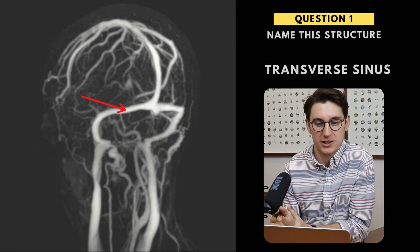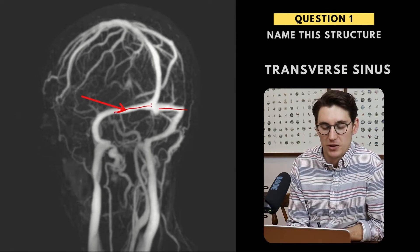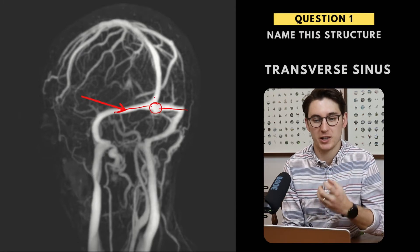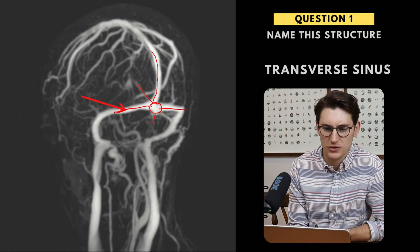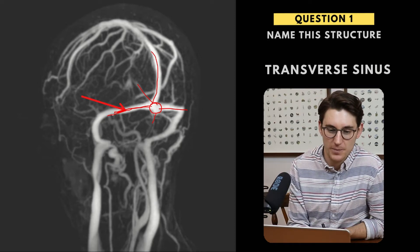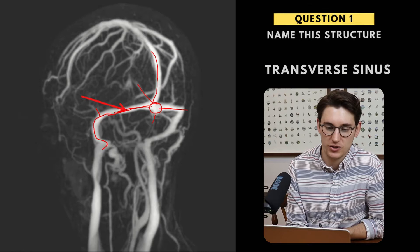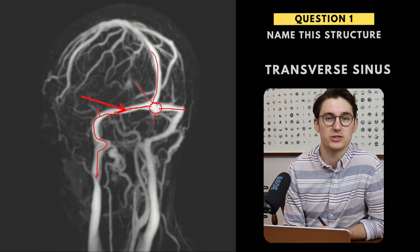What we have here is the transverse sinus. We've got paired transverse sinuses going both to the left and the right, coming from the confluence of the sinuses. The confluence is basically a draining point for the superior sagittal sinus, our straight sinus, and an occipital sinus. Our transverse sinus then drains blood away from the brain within the dural folds, coming along towards the sigmoid sinus. Just before it becomes the sigmoid sinus, we get the superior petrosal sinus joining the transverse sinus. The sigmoid sinus then comes down into the jugular bulb and into the internal jugular vein.